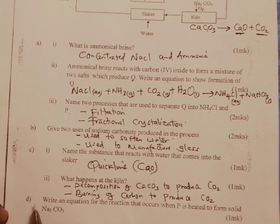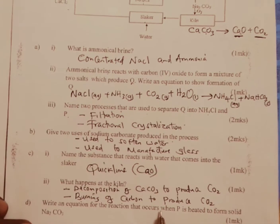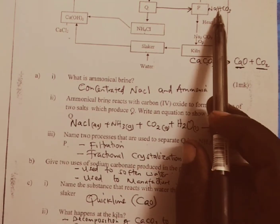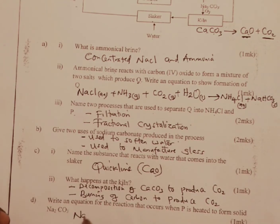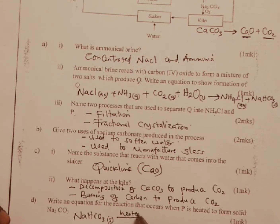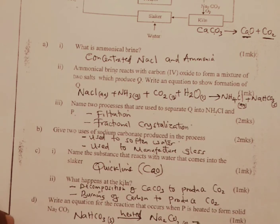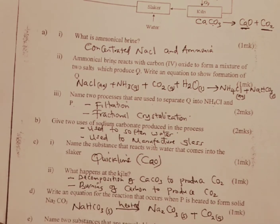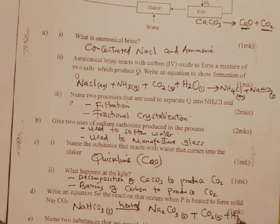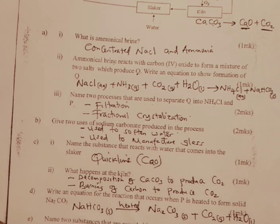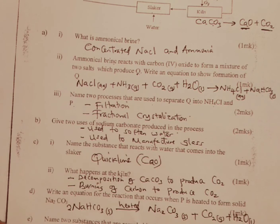Part D: write an equation for the reaction that occurs when P is heated to form solid sodium carbonate. P is sodium hydrogen carbonate (solid). When heated: 2 NaHCO3(s) → Na2CO3(s) + CO2(g) + H2O(l). Any time you heat a hydrogen carbonate, carbon dioxide and water are products. Writing 2 in front of sodium hydrogen carbonate balances the equation automatically.